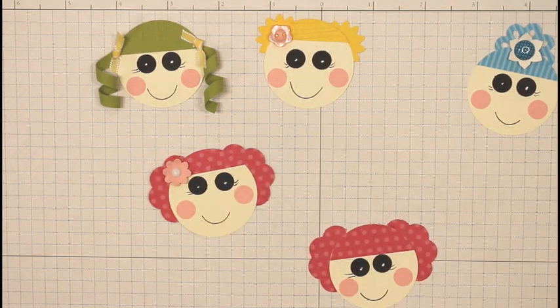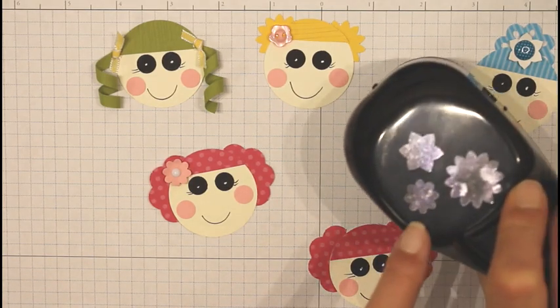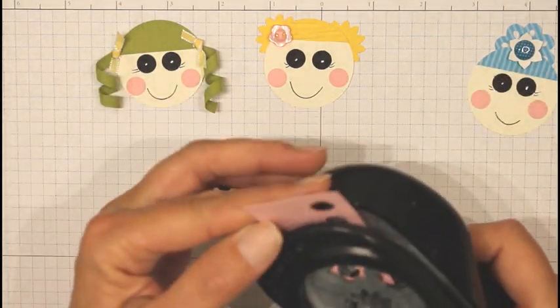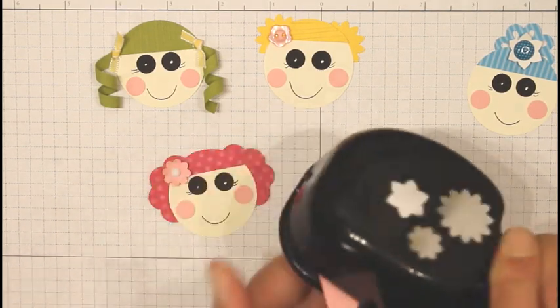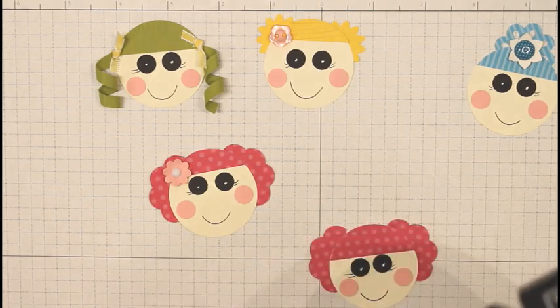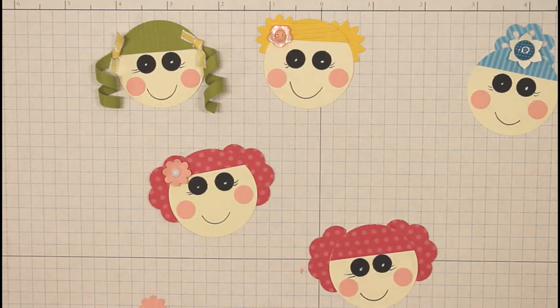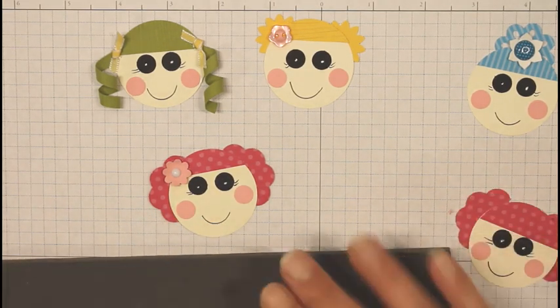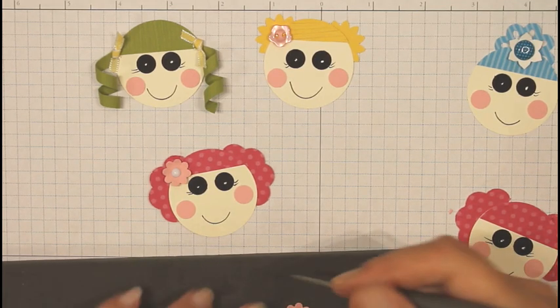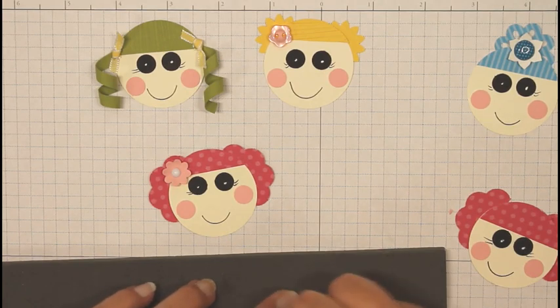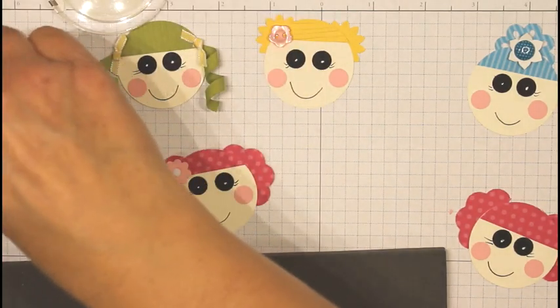And then to do the flower, I also took Boho Blossoms punch and I'm using the smallest flower. I'm punching out a flower in Pretty Pink. I'll take my new mat here. Love this. This is out of the new catalog this year. And paper piercer and poke a hole in the center. I'll attach a white brad.